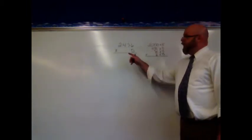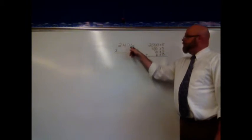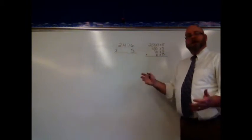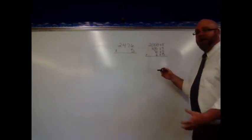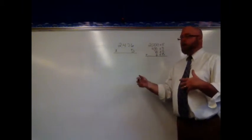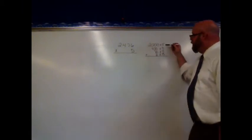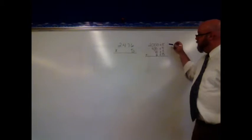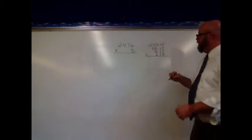Here we see the problem, 2,476 times 5. Again, I can think about that kind of in its expanded form where I write it out in place value as 2,000 times 5, plus 400 times 5, plus 70 times 5, plus 6 times 5.